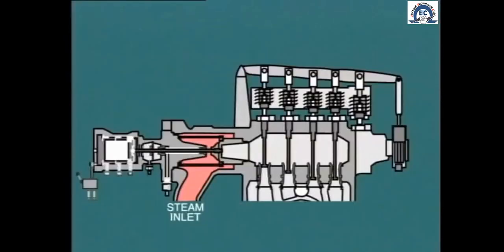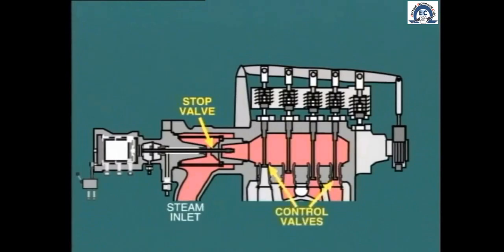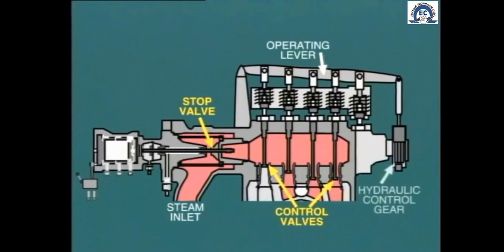In most arrangements of this type, a stop valve is fitted at the entrance to each steam chest. During normal operation, the stop valve remains in the wide-open position, while the control valves are modulated to adjust steam flow. The actual opening of the control valves is determined by the position of the operating lever, and this in turn is adjusted by the power cylinder of the hydraulic control gear.